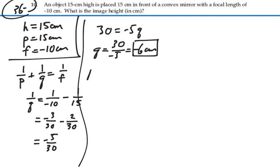The magnification is negative q over p, and that will be negative 6 over 15, or two-fifths.